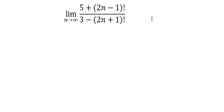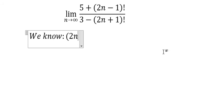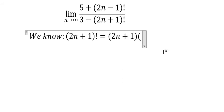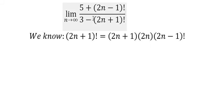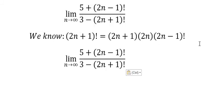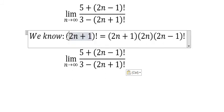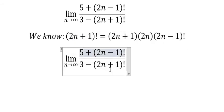I will show the technique to answer this question. We know that (2n+1)! equals (2n+1) multiplied by (2n) multiplied by (2n-1)!. This means (2n+1)! is larger than (2n-1)!, so we need to divide the numerator and denominator by (2n+1)!. We put that under number 5.